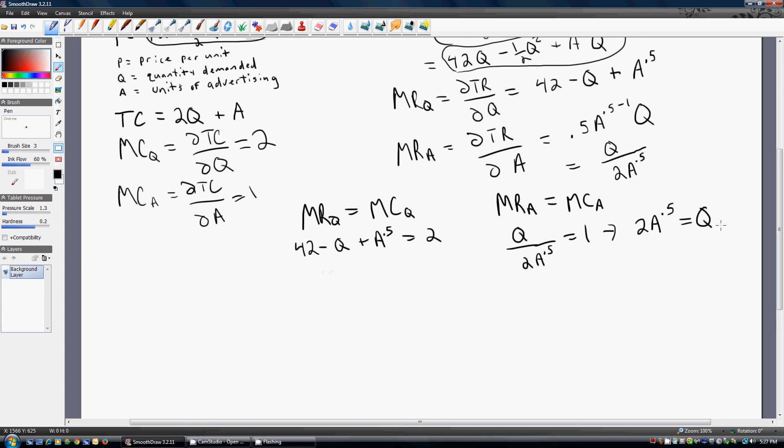And so we have that expression. We have two equations and two unknowns now. So what I'm going to do is substitute this 2 times the square root of advertising and for Q over here. And if we do that,